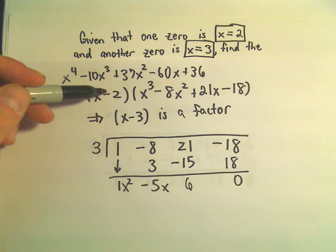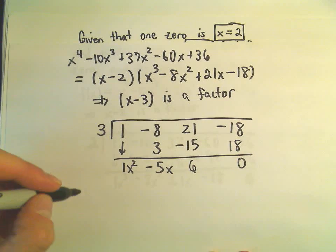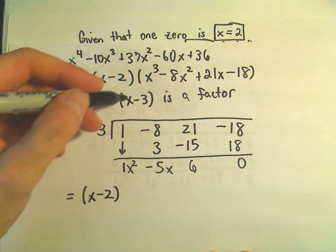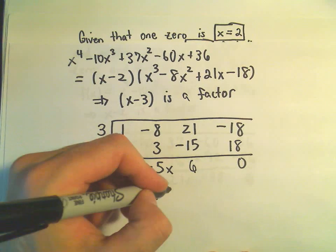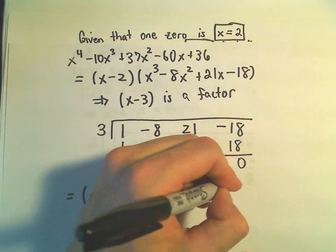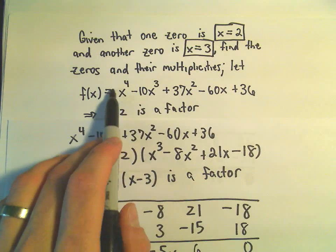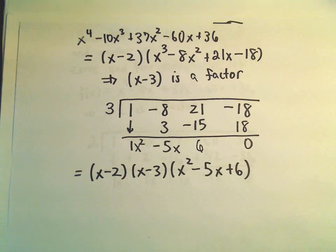So it says this x minus 2 times x cubed minus 8x squared plus 21x minus 18, it says that really we can write that as x minus 2. We said that if we divide that by x minus 3, another one of our factors, we'll be left with x squared minus 5x plus 6. So now we've almost got this very original kind of complicated looking polynomial. We've almost got it factored out.